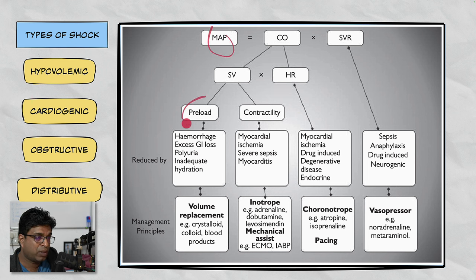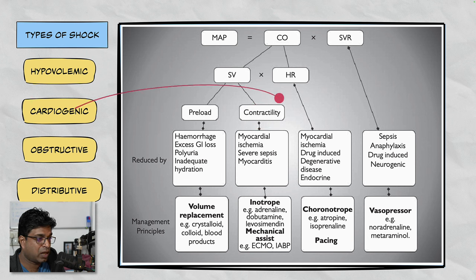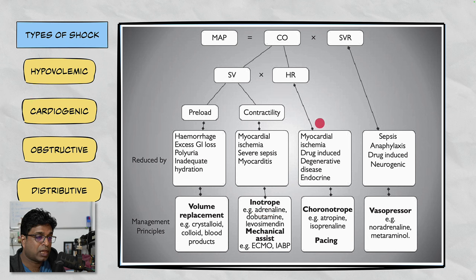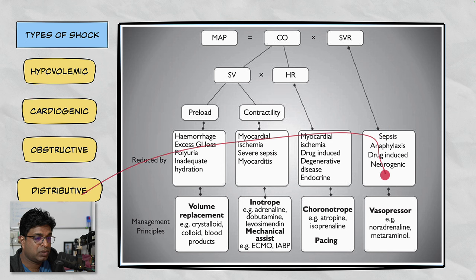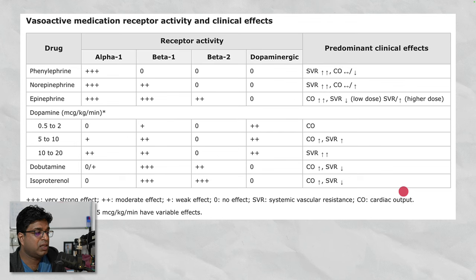To summarize: MAP depends on preload, heart contractility, heart rate, and afterload. If preload is low — hypovolemic shock — supplement volume. If contractility is failing — cardiogenic shock — use an inotrope to increase contractility. If heart rate is failing, use a chronotrope like atropine. If vasodilatation is the cause, use vasopressors. This is the framework for selecting agents. Always try to find out which type of shock your patient is having.